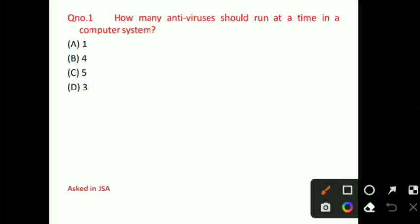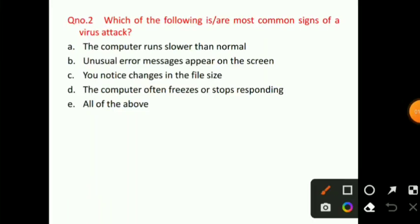Starting with question number 1: How many antiviruses should run at a time in a computer system? The right answer for question number 1 will be option A — that is one only. Only one antivirus should run at a time in a computer system.